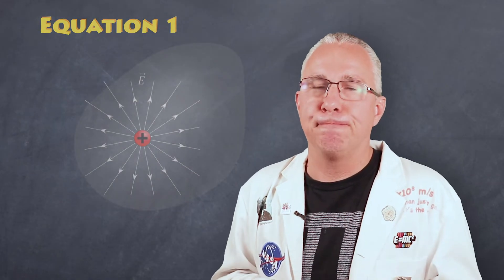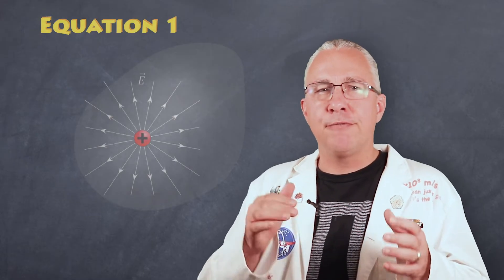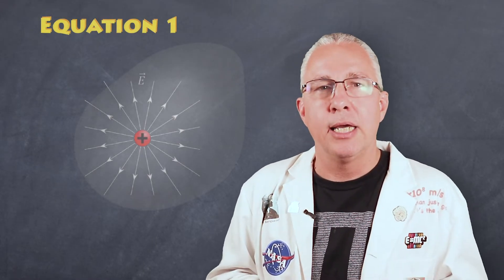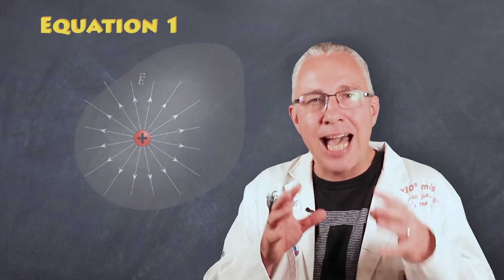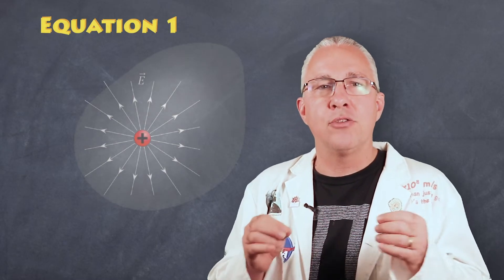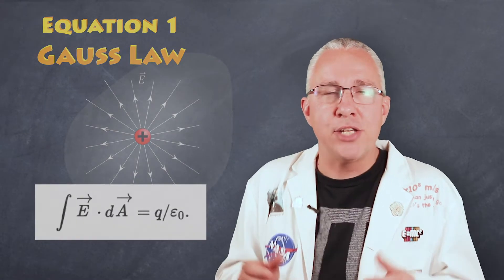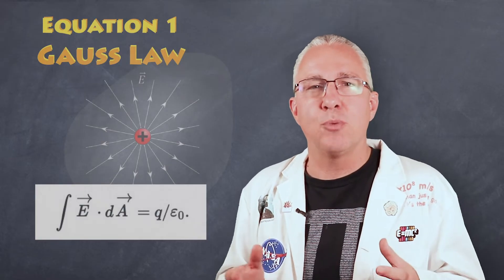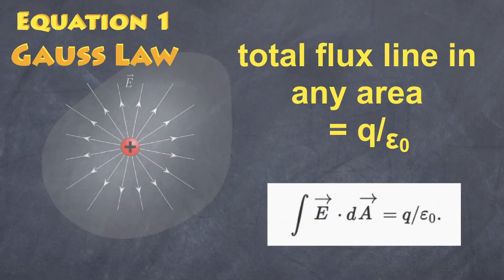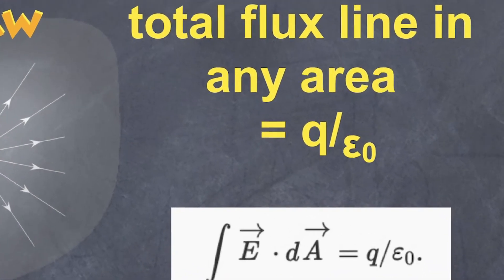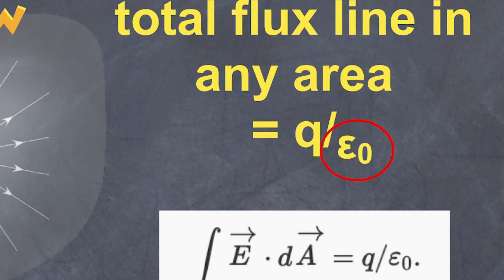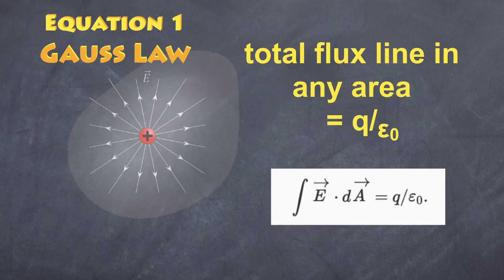But what if the surface is not a sphere? In essence if you divide the surface into many smaller parts and then calculate the flux lines in each area and then add up these areas you get the total electric flux for this whole area. In essence that is what integration does. It divides the surface into an infinite number of smaller areas and then adds them up. And the value ends up being the value of the charge divided by epsilon naught. Now epsilon naught is the permittivity of free space and it is a universal constant. So no matter what area you have the total flux is always equal to the charge divided by epsilon naught.